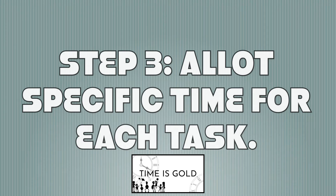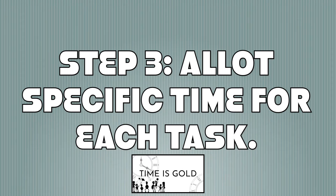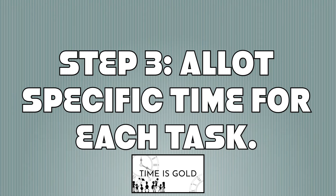The next step is to set some specific time to begin and end each of the activities that you listed in each category. You need to be wise and reasonable in allotting specific time for each. The more prioritized tasks need longer time duration while the less prioritized tasks need shorter time duration. In this way, you would feel more composed upon doing each task because there is a time limit. You will be able to put much effort on the tedious tasks more than the easy tasks.